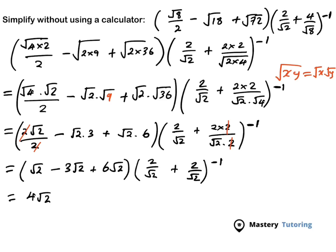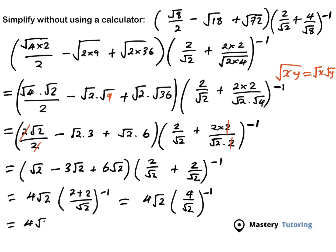And then this one is going to be multiplied by... so I'm going to take away these brackets, I don't need them anymore. Because the denominator is the same we can add the numerators, so this is going to be 2 plus 2 over square root of 2, to the power of negative 1. And this is the same as 4 square root of 2 multiplied by 4 over 4 square root of 2. Now I want to write the reciprocal of this — so the reciprocal is going to be square root of 2 over 4.